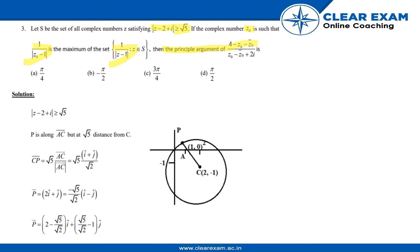If you see this, it is basically the form of a circle: |z - 2 + i| ≥ √5. So you can refer to this figure. C is at (2, -1).